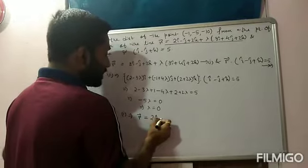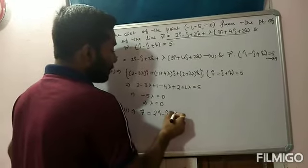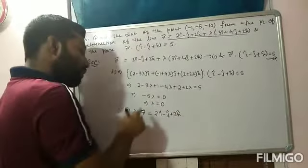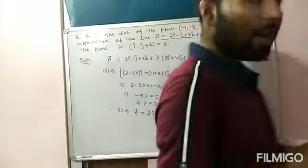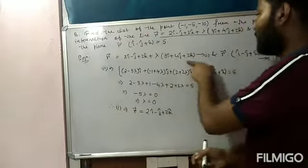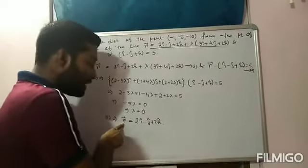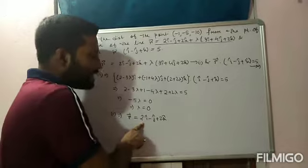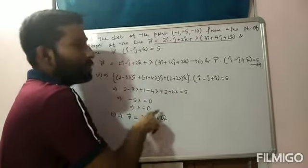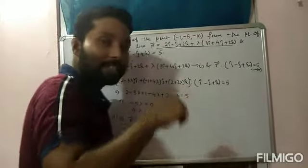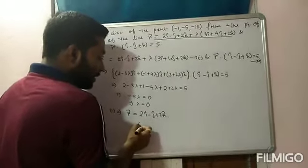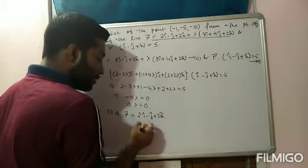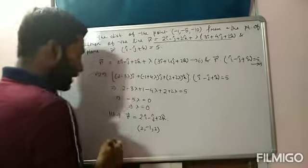So: −3λ − 4λ = −7λ, and the constants 2 + 1 − 2 = 1 (wait: 2 − 1 + 2 = 3, and 3 + 2 = 5). Simplifying: −7λ + 5 = 5, which gives −7λ = 0, so λ = 0. Now, after substituting R̄ from equation 1 into equation 2, we got λ = 0. Now put the value of λ in equation 1. In equation 2 there is no λ, so we use equation 1.